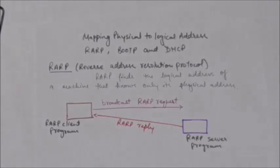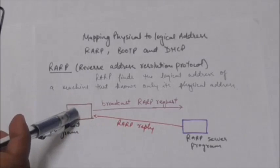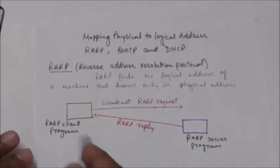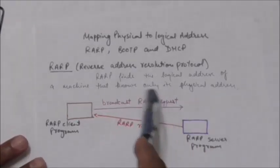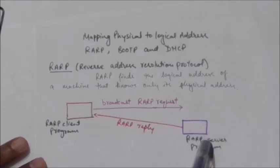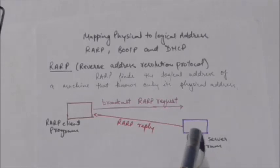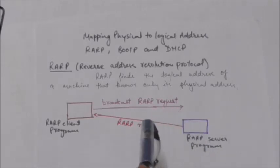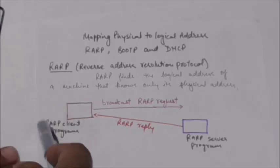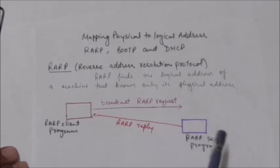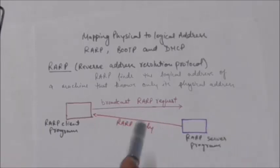The machine can then use this physical address to get its logical address using RARP protocol. A RARP request is created and broadcast on the local network. Another machine on the local network that knows all the IP addresses will respond with a RARP reply. The requesting machine must be running a RARP client program and the responding machine must be running a RARP server program.